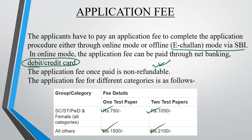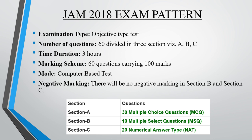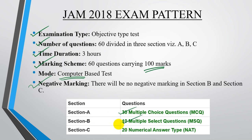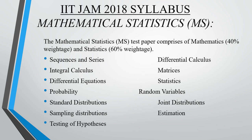The exam is objective in nature. There are 60 questions divided into Sections A, B, and C, carrying a total of 100 marks, with a time duration of three hours. It is a purely online computer-based examination. There will be no negative marking in Section B and Section C. Section A has 30 multiple choice questions, Section B has 10 multiple select questions, and Section C has 20 numerical answer type questions.